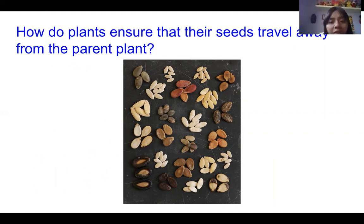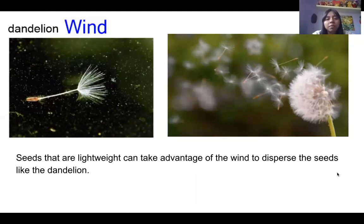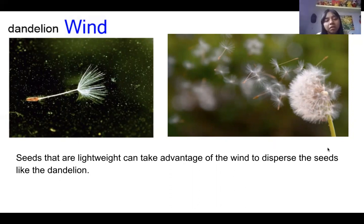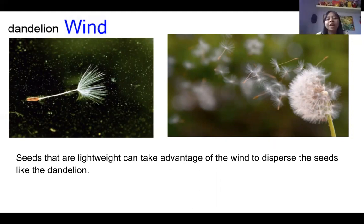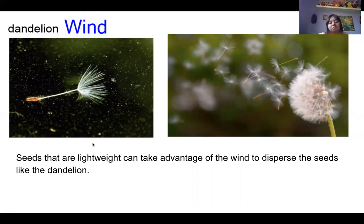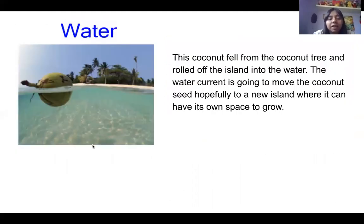Plants have also adapted to ensure their seeds travel away from the parent plant. Seeds come in different shapes and sizes — you may recognize sunflower seeds, pumpkin seeds, and legumes in the picture. One way plants disperse seeds is by taking advantage of wind. Dandelion seeds are very lightweight and have a little fan that allows them to be picked up by the wind. When it's windy, the dandelion shakes, loses its seeds, and they fly as far away from the parent plant as possible.